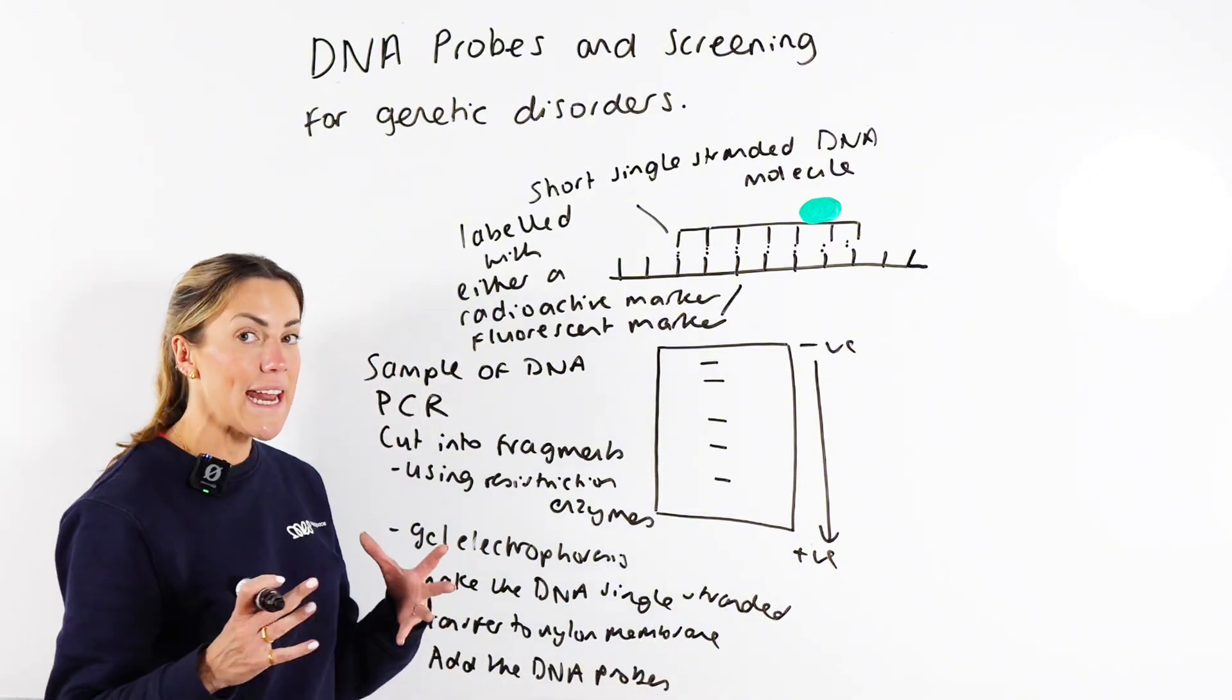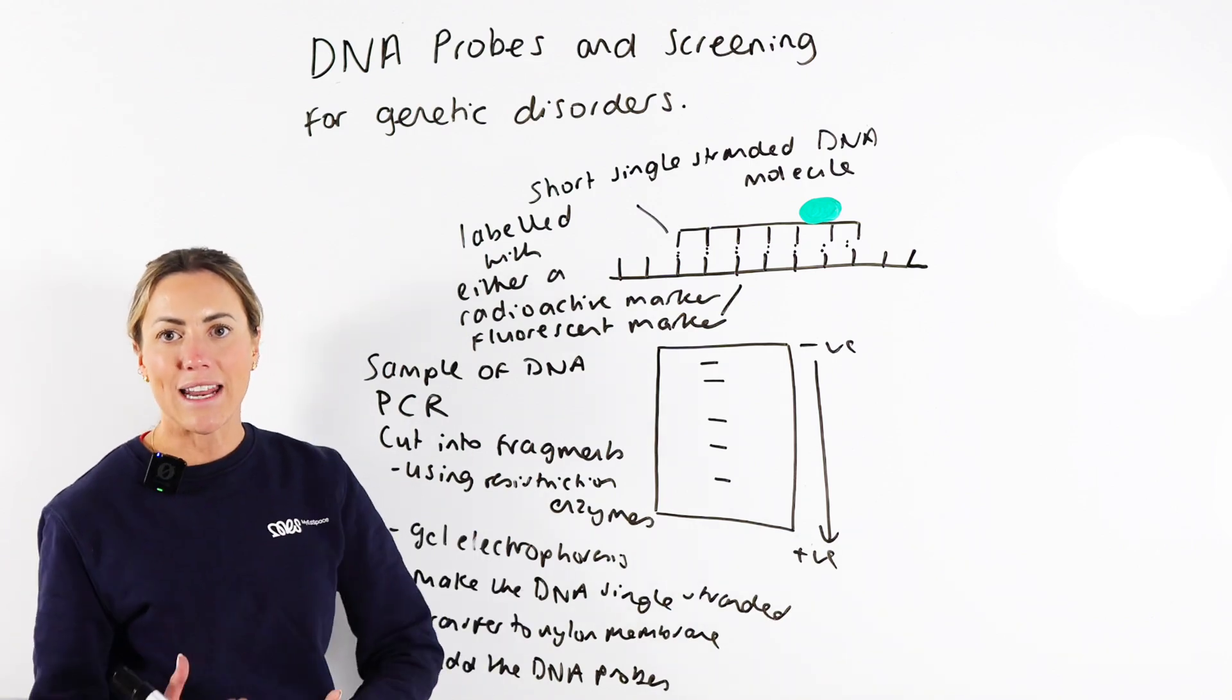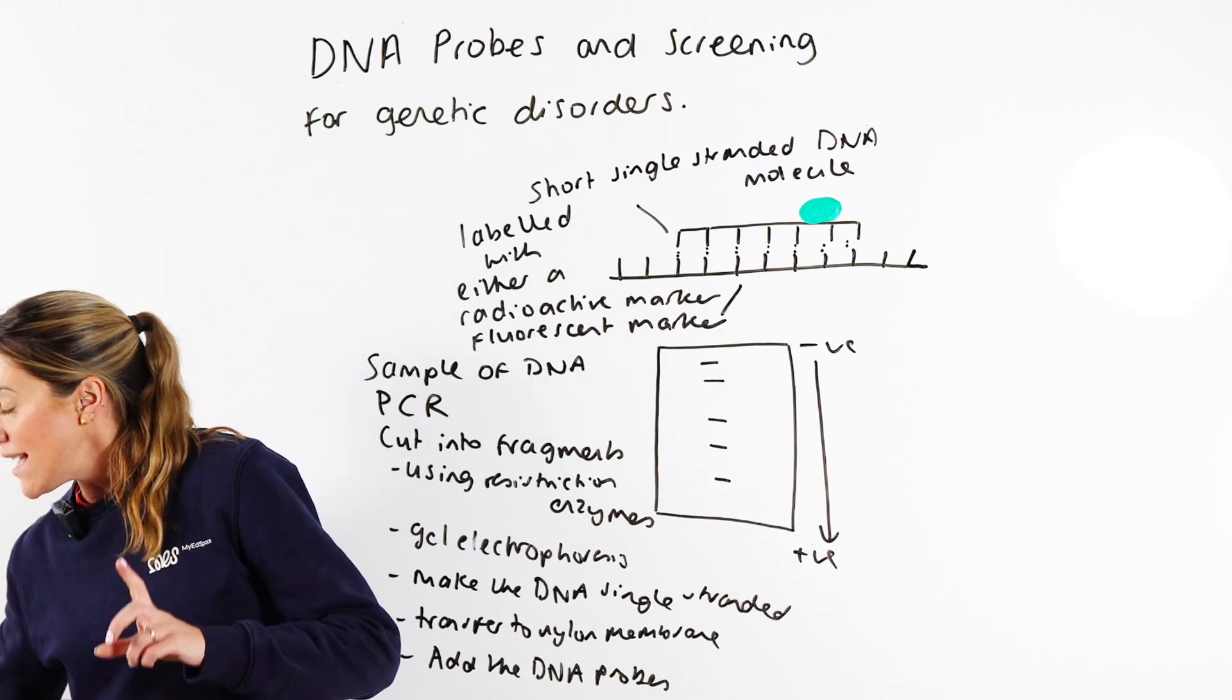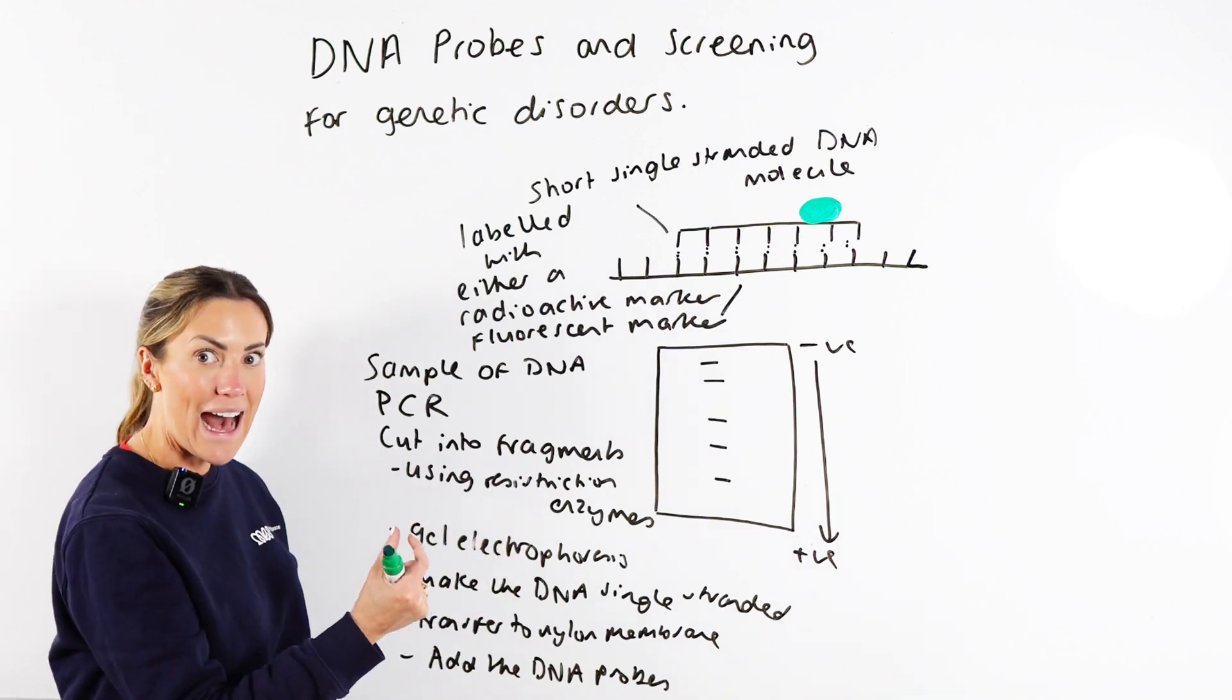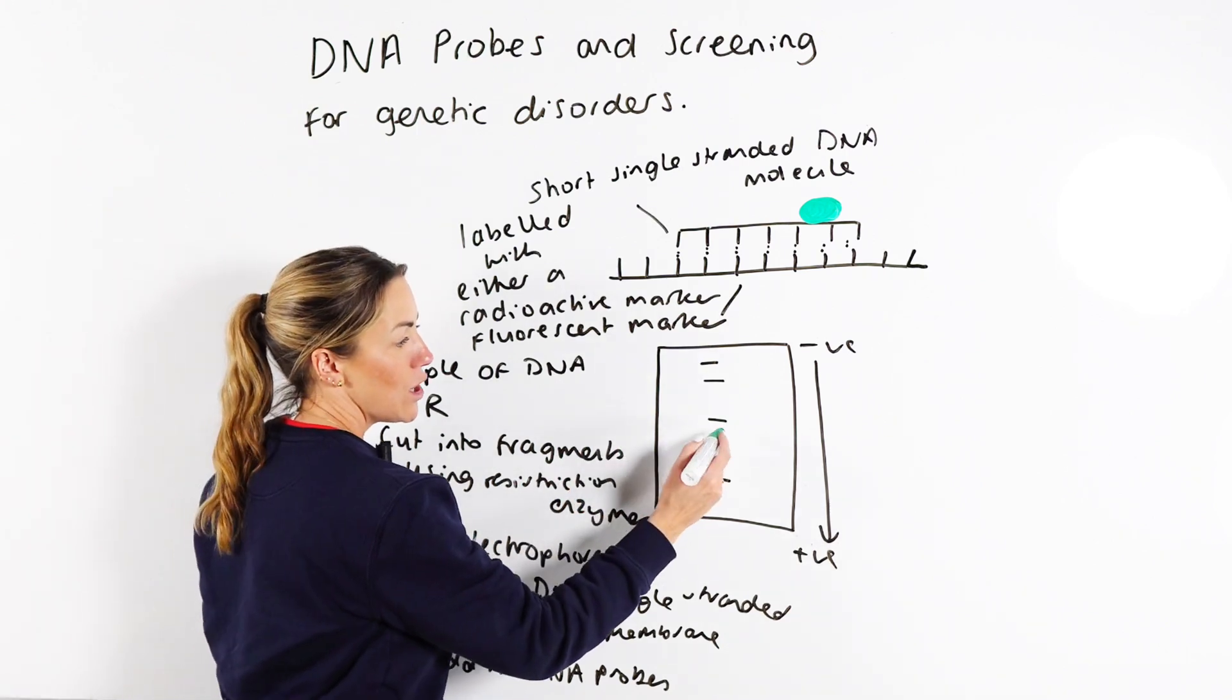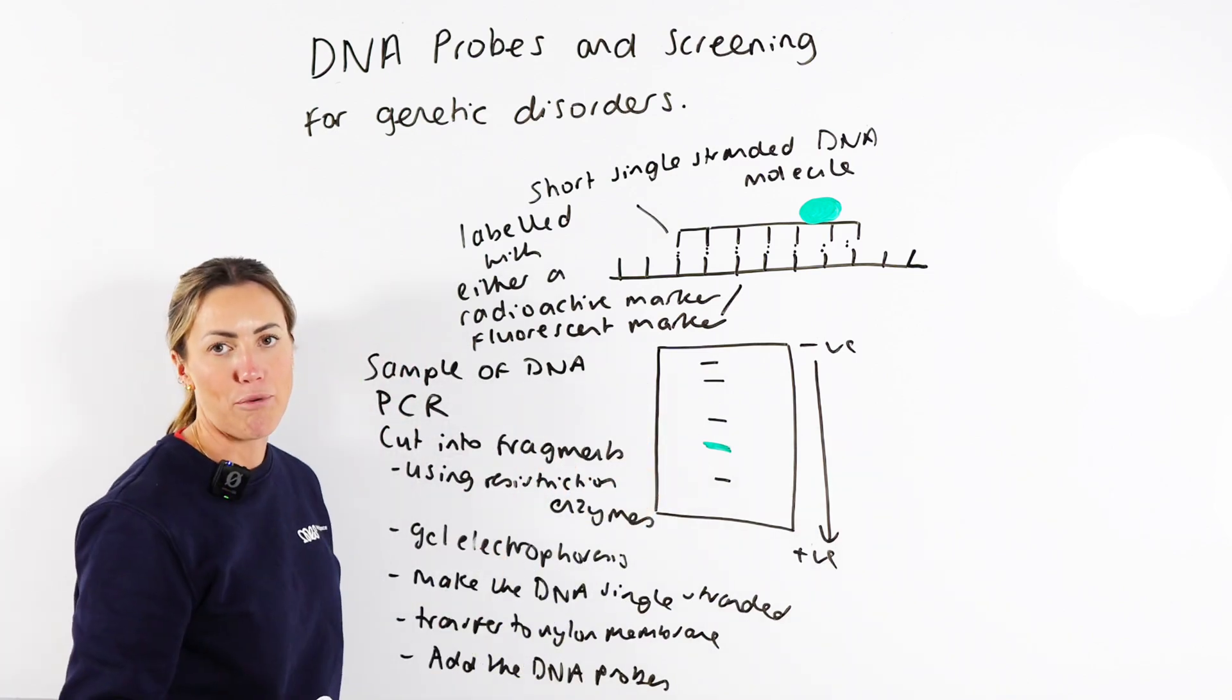And remember, the DNA probes that have been manufactured are complementary in base sequence to specific alleles of interest, alleles that potentially are harmful, mutated, or lead to a genetic disorder. So when you add those DNA probes, if the individual had the allele of interest, therefore they had the complementary base sequence to the probe, the probe will be able to bind to the DNA fragment or hybridize with the DNA fragment, and then you'll be able to visualize that that probe has bound.